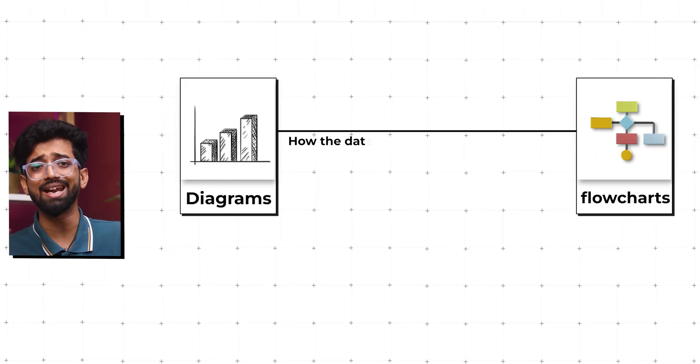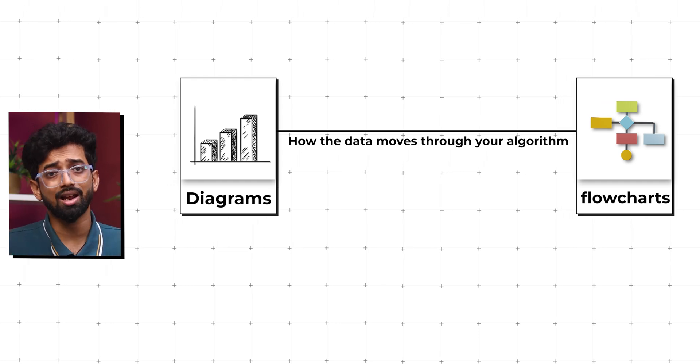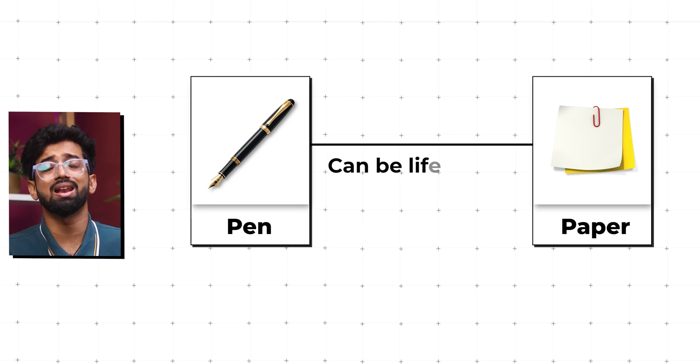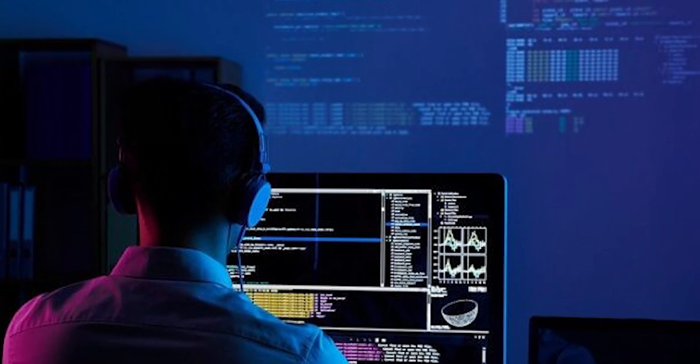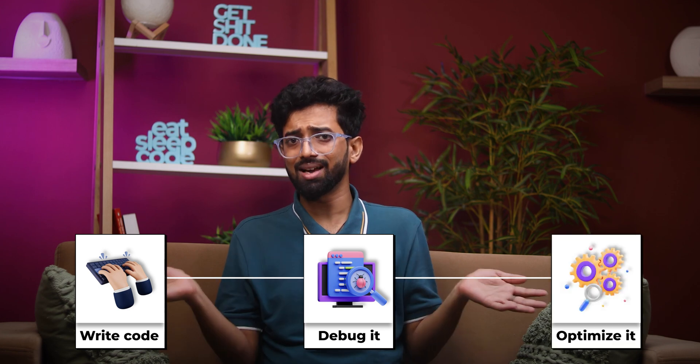Use diagrams and flowcharts to see how the data moves through your algorithm. Tools like VisuAlgo, or even a simple pen and paper, can be a lifesaver. Always remember that understanding how an algorithm works is more important than just knowing how to code it. Implement algorithms in your preferred language — write code, debug it, and optimize it.